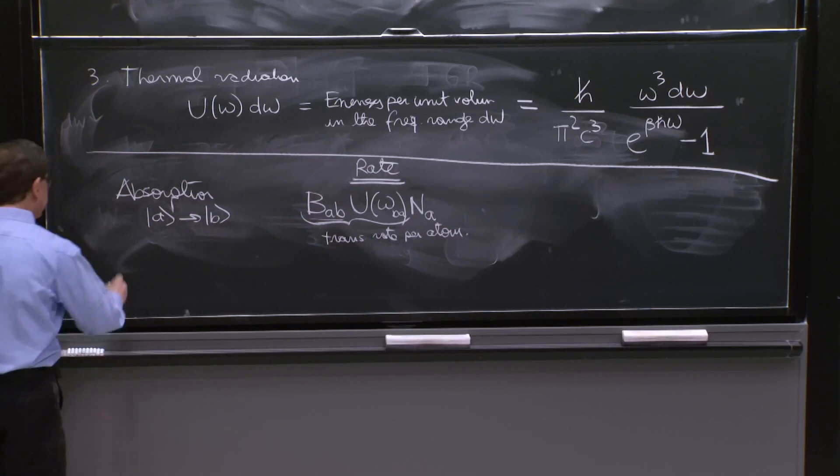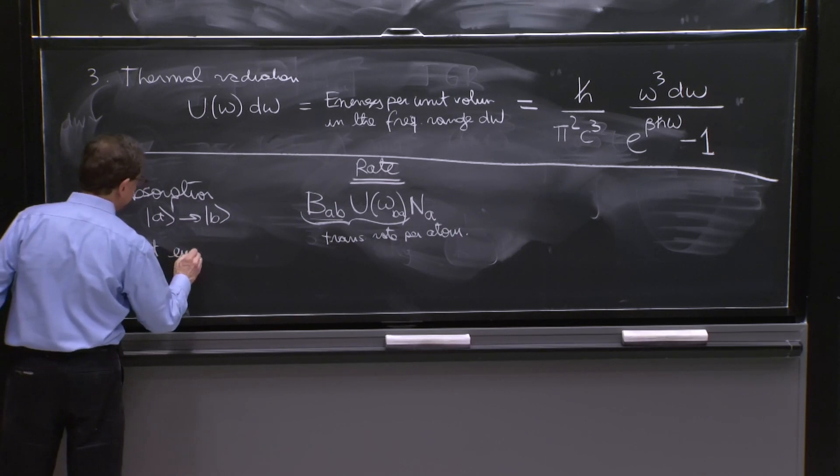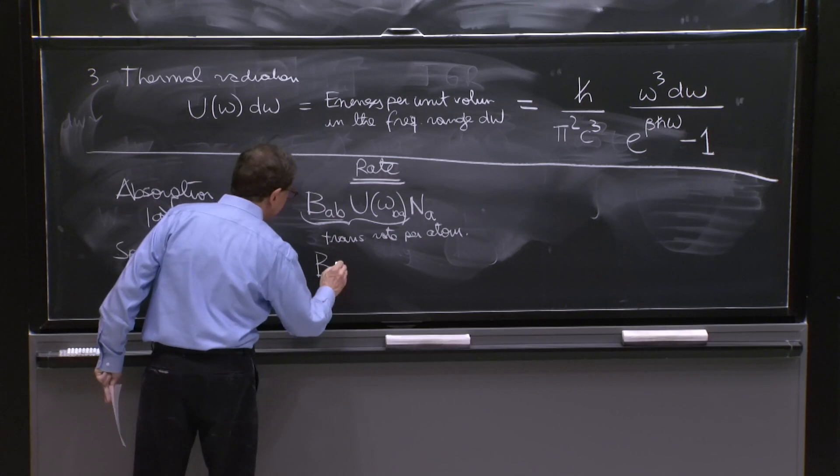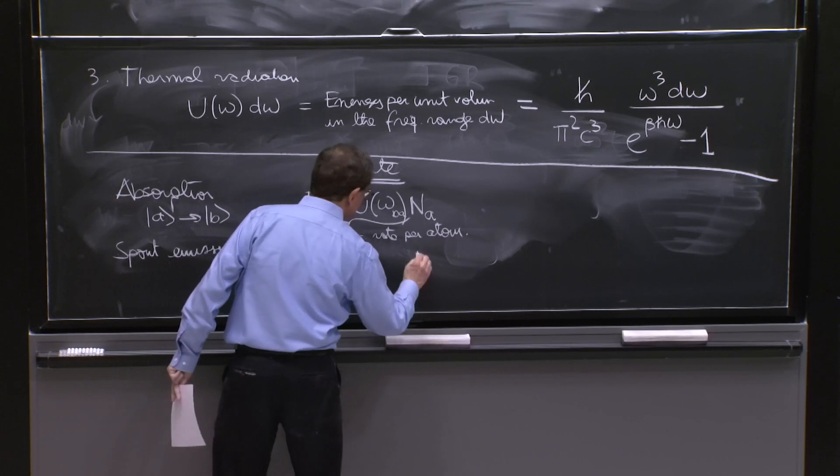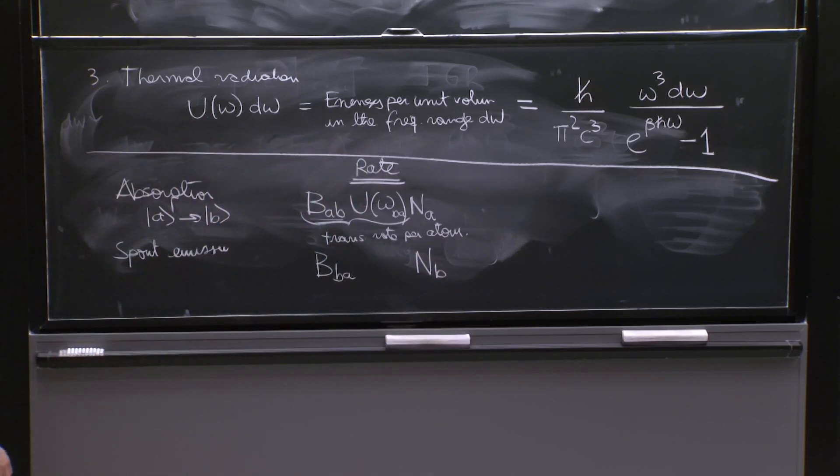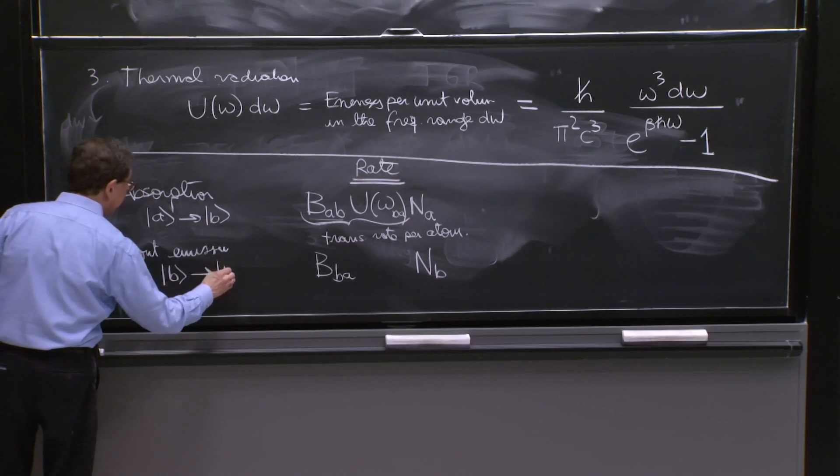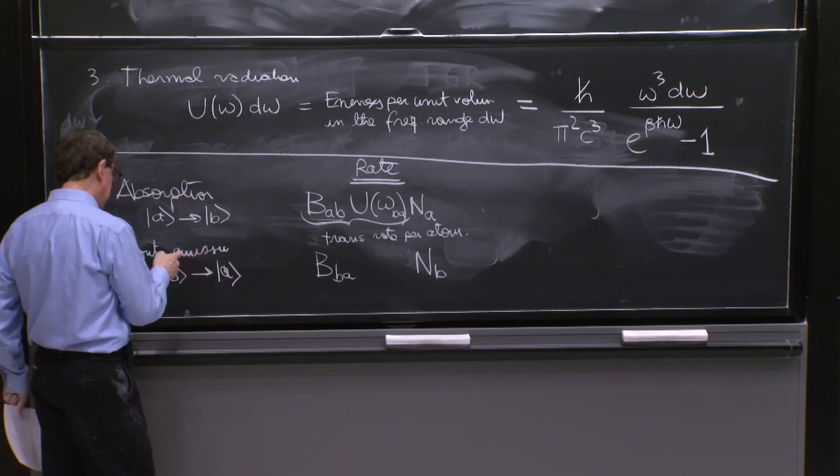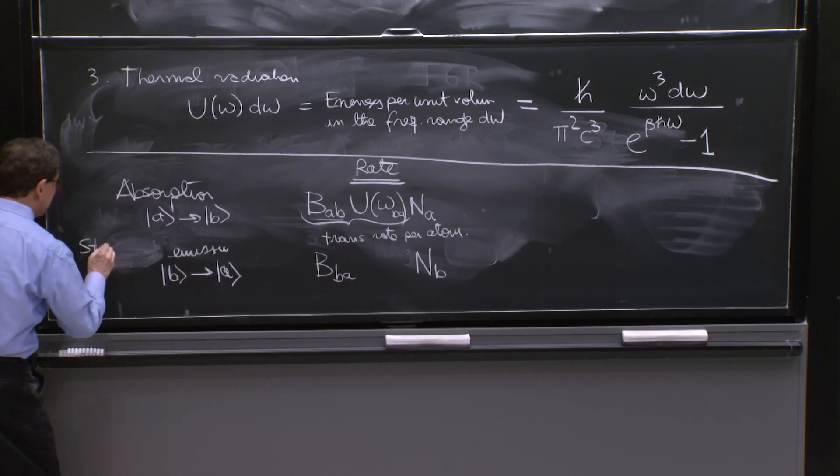Then we have the process of spontaneous emission. And then it would be another coefficient BBA, and it would depend on the number of particles that are in the state B, because spontaneous emission is a transition from B to A. It will, we call it not spontaneous, stimulated, I'm sorry. Stimulated emission.